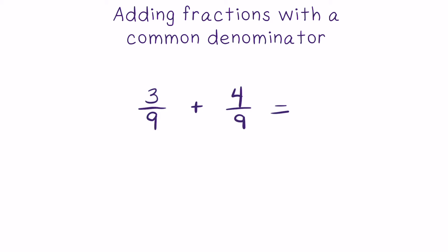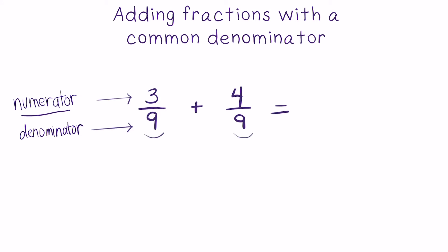Whenever we are adding fractions, the first thing we have to do is look to the denominator of each addend and see if both addends share a common denominator or a like denominator. In this case, we can see both addends have a denominator of 9.